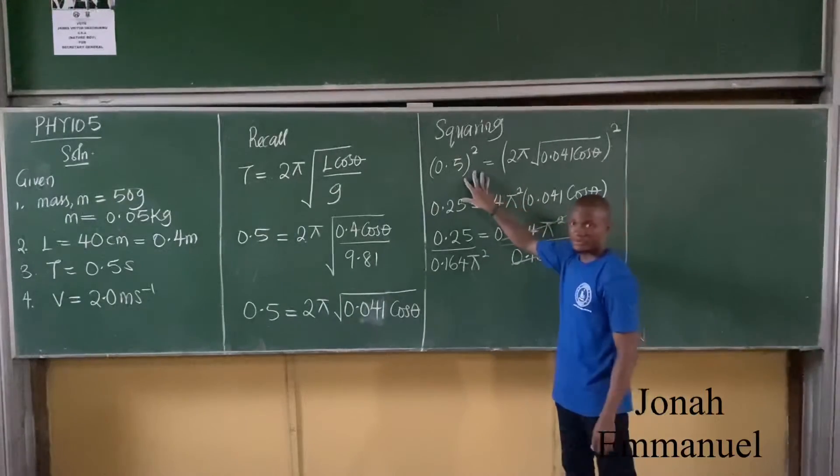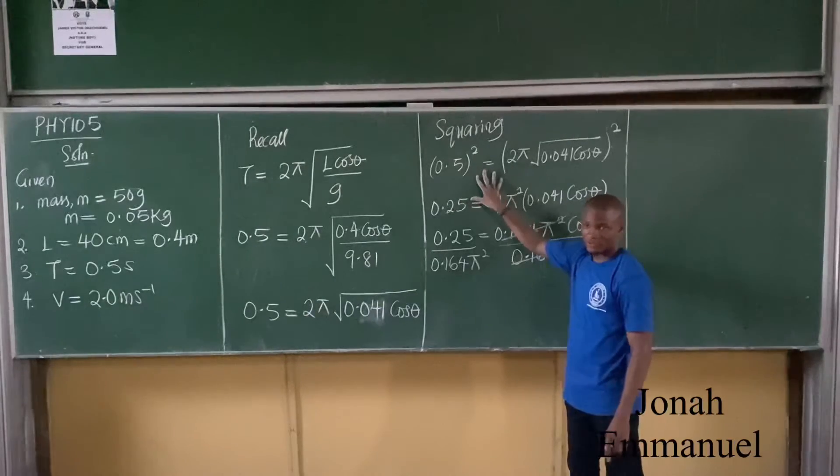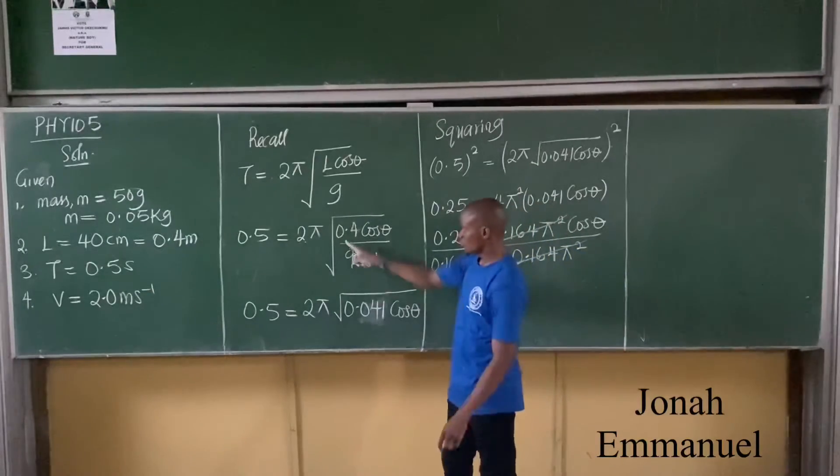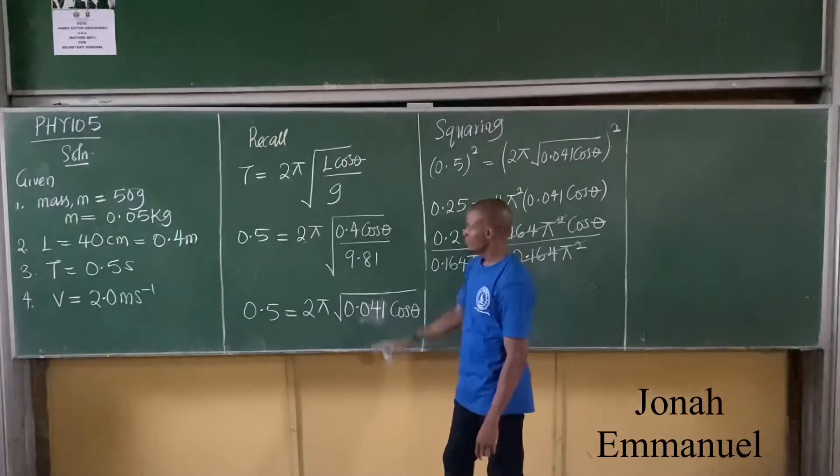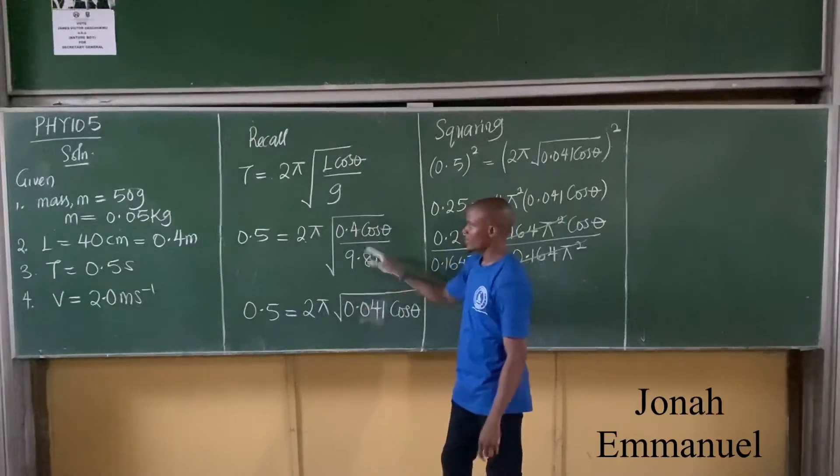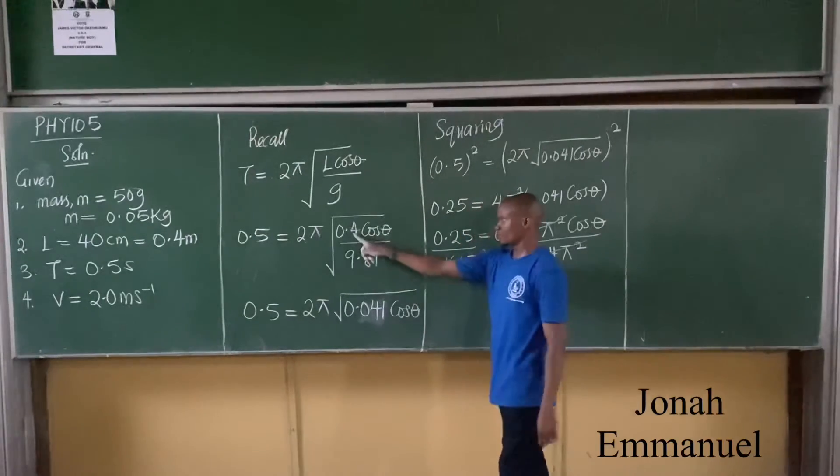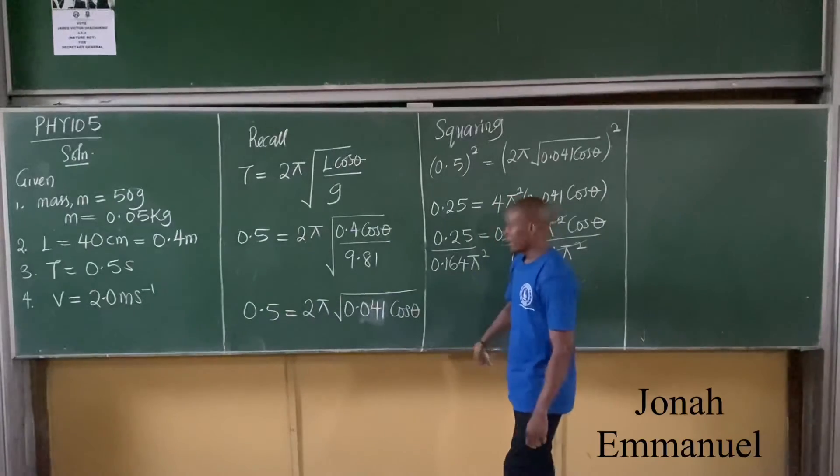Hold on, look at this part. How do you get 0.04? Just do 0.4 over 9.8, that gives you this value. So just do this over this, gives you this. That's it.